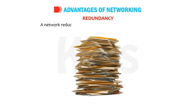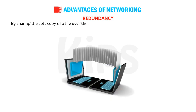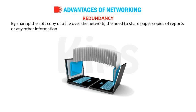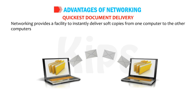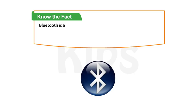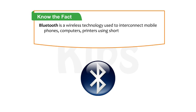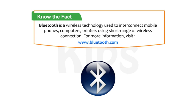Redundancy — a network reduces the need for hard copies of all documents. By sharing the soft copy of a file over the network, the need to share paper copies of reports or any other information can be greatly reduced. Quickest document delivery — networking provides a facility to instantly deliver soft copies from one computer to other computers throughout the world. Note: Bluetooth is a wireless technology used to interconnect mobile phones, computers, and printers using a short-range wireless connection. For more information, visit www.bluetooth.com.